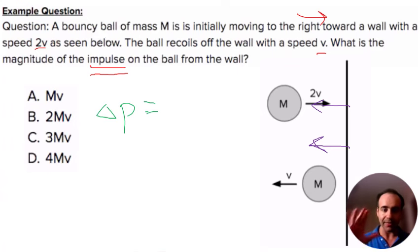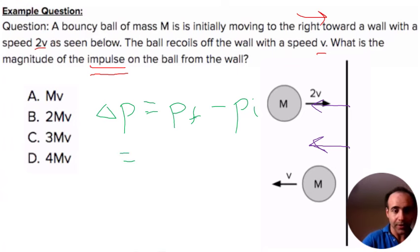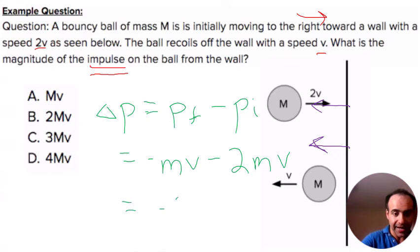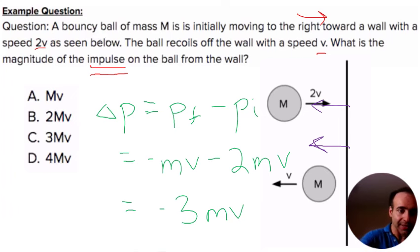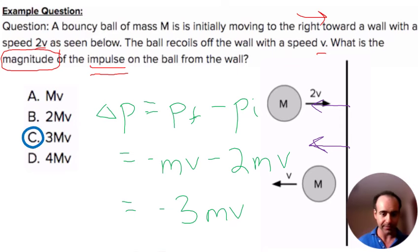We're not given the value of the force or a delta T, so we'll use P-final minus P-initial. Our P-final was negative mv, and our P-initial was positive 2mv because we had the speed 2v. Subtracting those, we get negative 3mv. Since impulse is a vector, it would actually be moving to the left. However, since they want the magnitude of the impulse, the answer is 3mv.